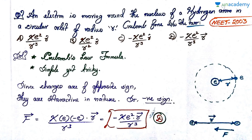The last question is simple but can be a little tricky. An electron is moving around the nucleus of a hydrogen atom in a circular orbit of radius small r. What is the Coulomb force between the two? There are four options — you may think it's easy, but please think hard before selecting. Pause the video and attempt the question.